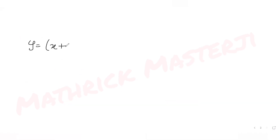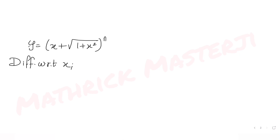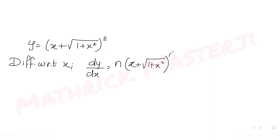The question says y = (x + √(1 + x²))^n. If I take the first derivative with respect to x, differentiating with respect to x, I get dy/dx equal to the derivative of x^n, which is n times x^(n-1). Here x is this entire expression, so we take the derivative of that as well.